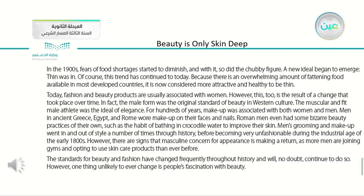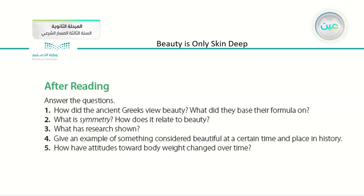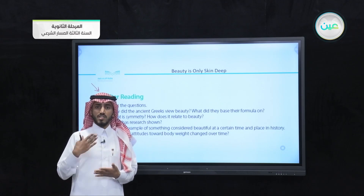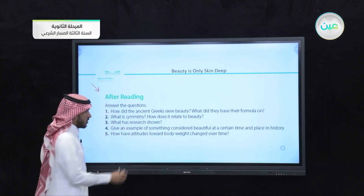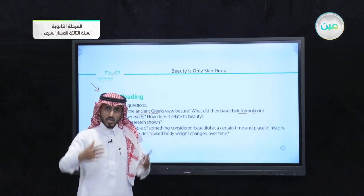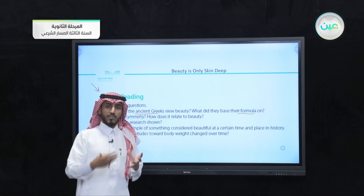We discussed some of the concepts that have changed from the past to the present. Then we moved to the post-reading part, which is comprehension questions. We talked about the proper way of answering these five questions: read the question, try to find the key words — for example, in question one the key words are ancient Greeks and formula — then underline those key words and go back to the essay and scan for them.